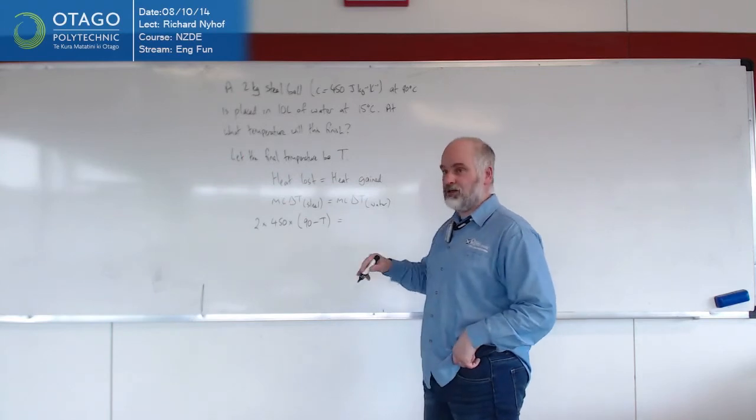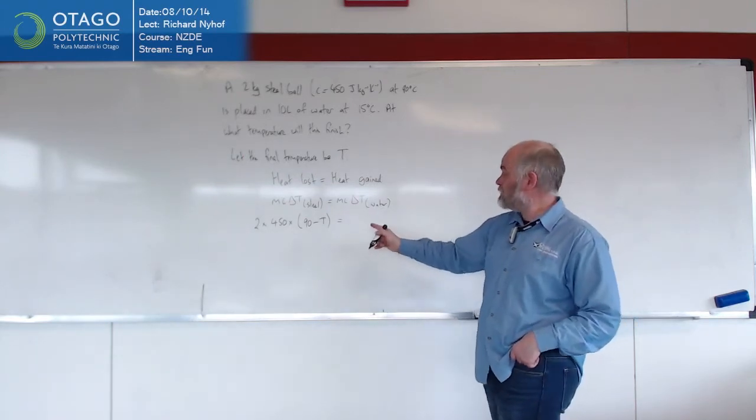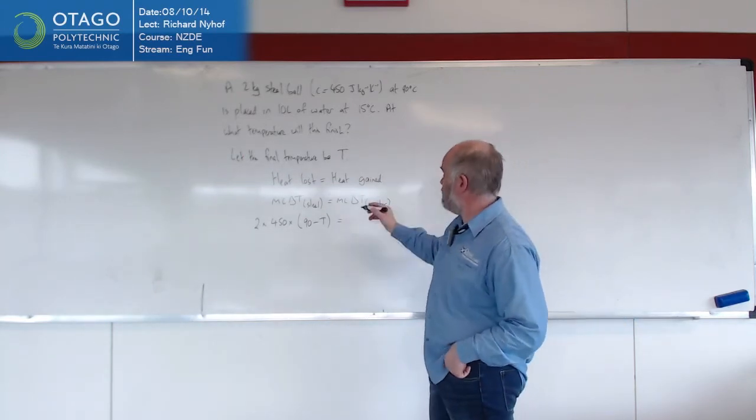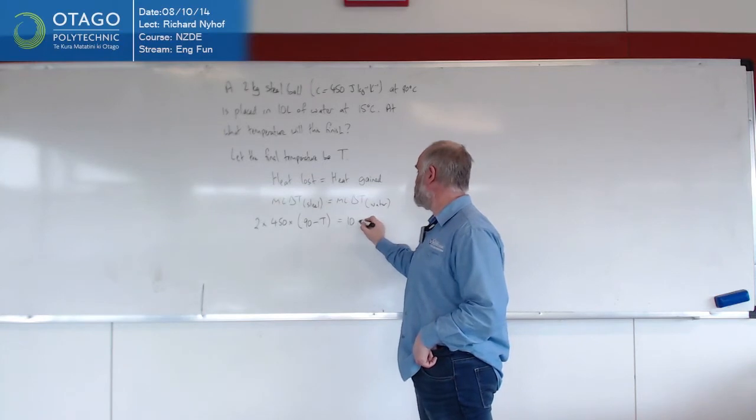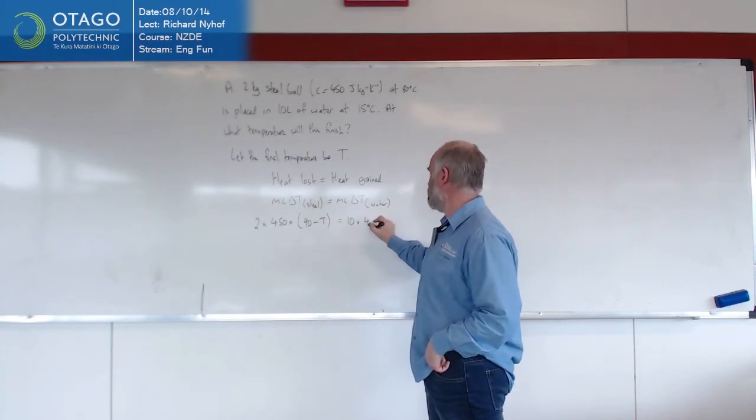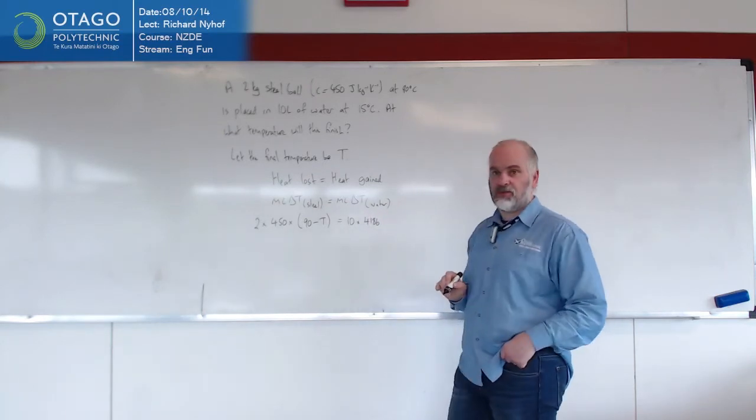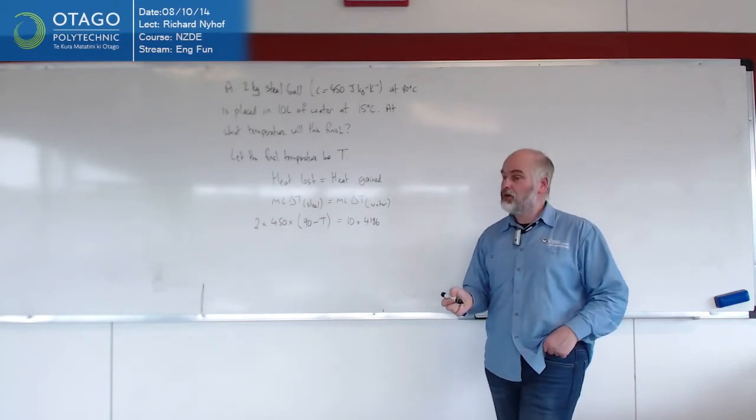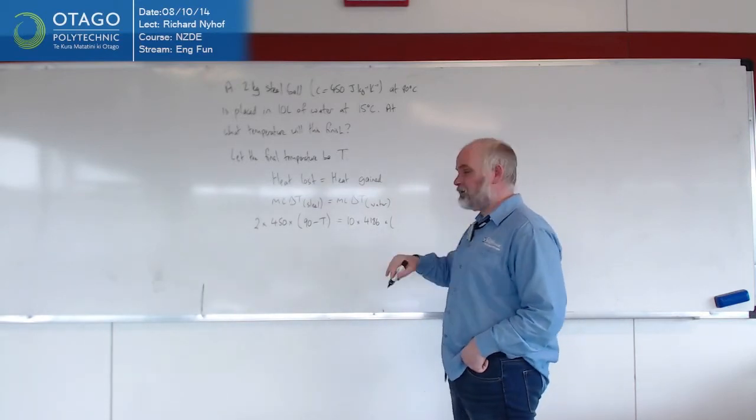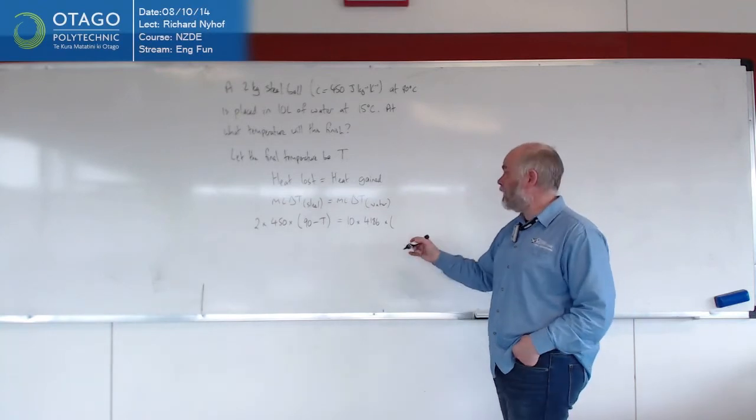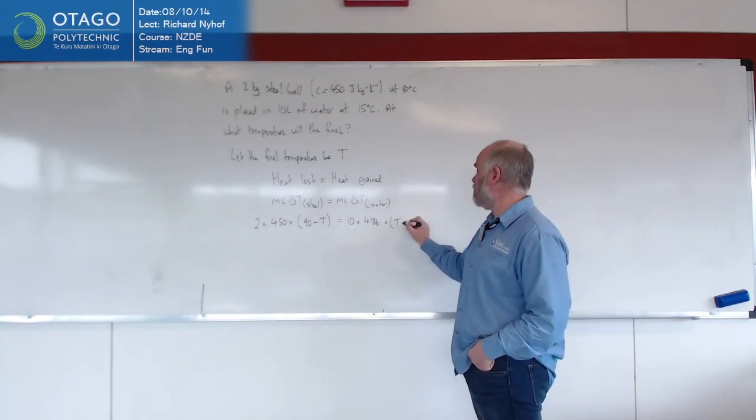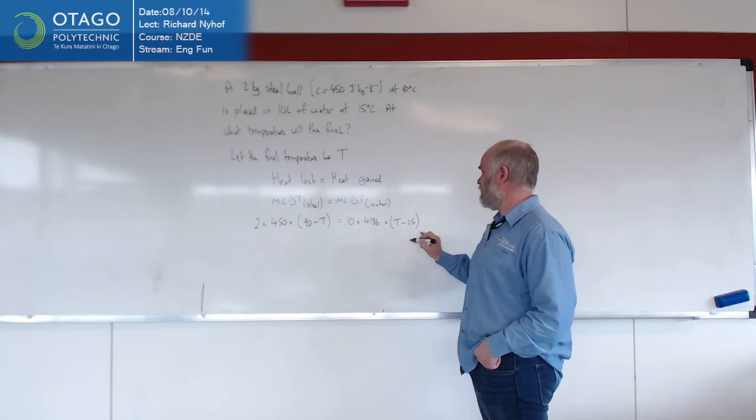And the water is going to gain some energy. So the water is 10 litres, which is 10 kgs, times 4186, specific heat capacity of water. And then we've got to say, how much is the water gaining? Well, it's gaining the difference between wherever it finishes and 15.